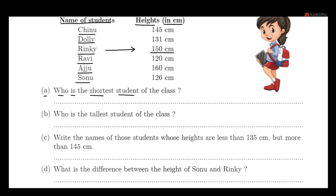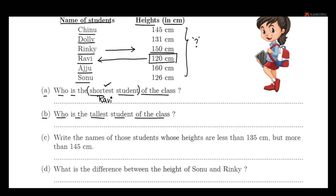Who is the shortest student of the class? To find the shortest student, we look for the least value among all the heights. Ravy is the shortest student of the class.